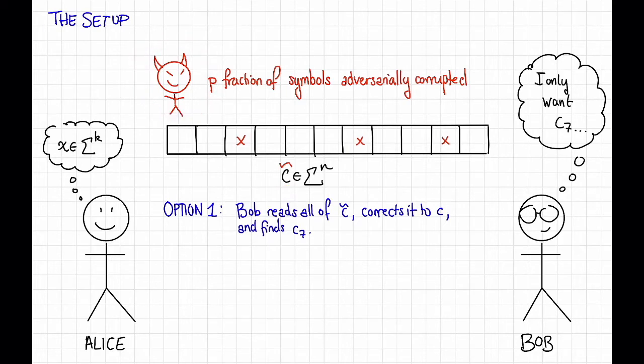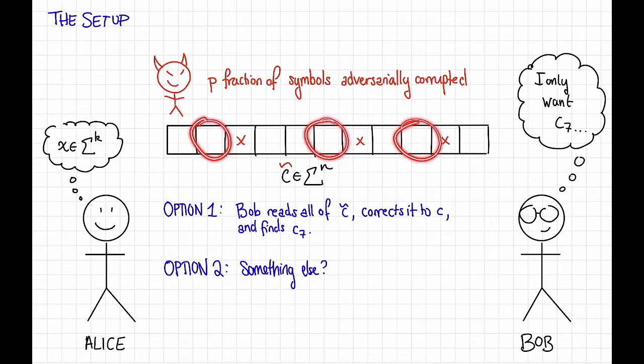So our goal is going to be for Bob to do something else. We're going to want Bob to do something that's closer to just look up the seventh symbol than it is to read the entire thing, do the decoding, and then throw away almost all of it. What we're going to hope for Bob to be able to do is to query just a few different positions of this code word, like that one, that one, and that one, which may or may not include the seventh symbol, and from those few positions be able to deduce the information that he wants.